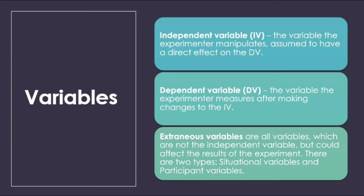Dependent Variables: this is the variable that changes as a result of changes made to the independent variable — it totally depends on the independent variable. Extraneous Variables: these are variables that are not the independent variable but would still have an effect on the results of the experiment. They can be of two types: situation variables and participant variables.